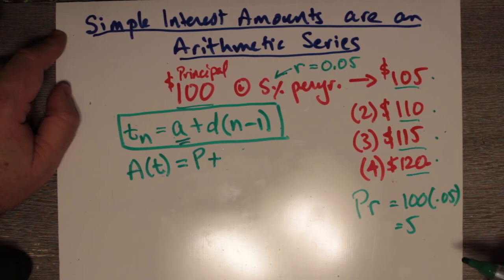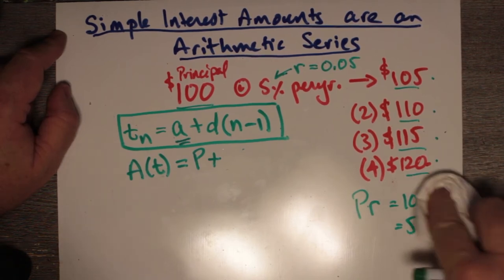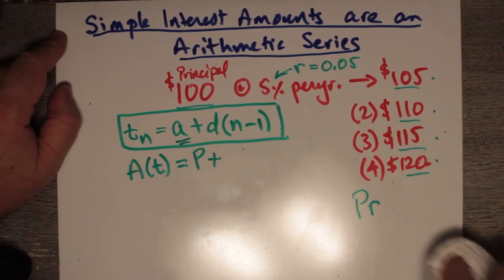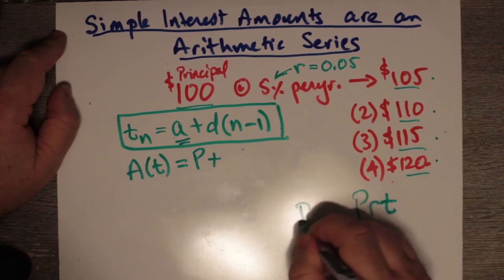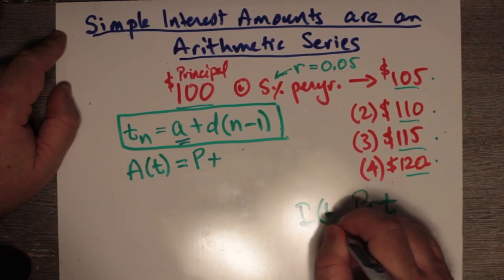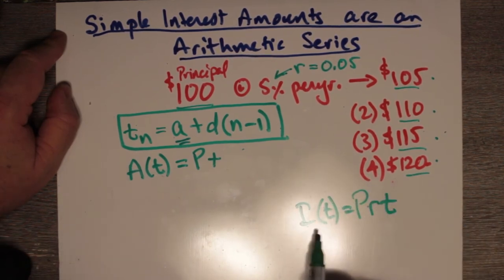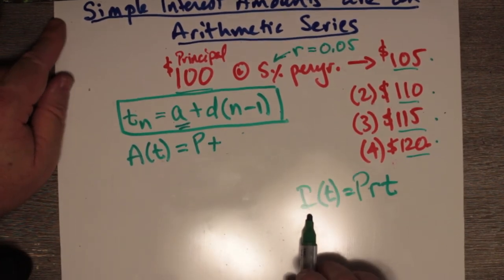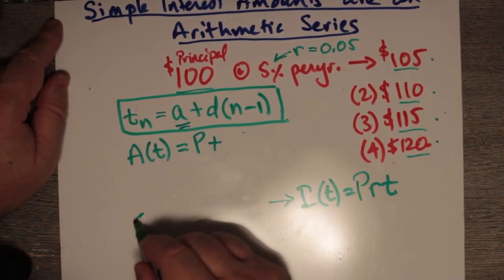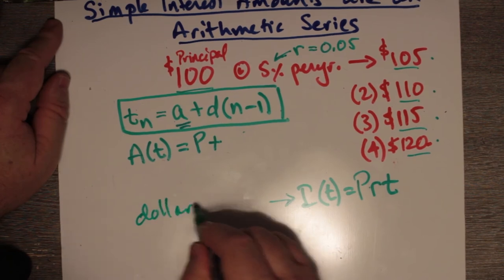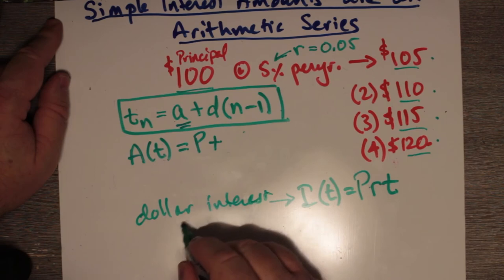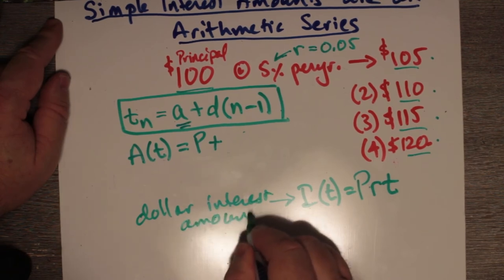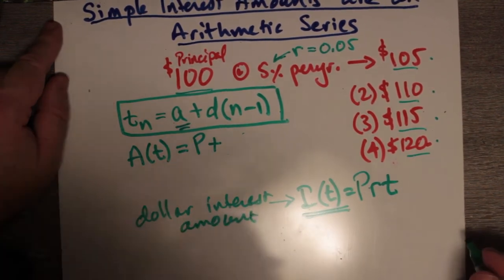So the total amount of interest over time is not just PR, but PRT, right? Because we've got to multiply by time, which would be the number of years. So this is our, we call this another function of time, then. The dollar interest rate amount, the interest rate amount in dollars, which is another function of time. It's PRT.